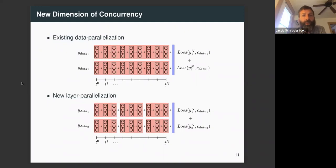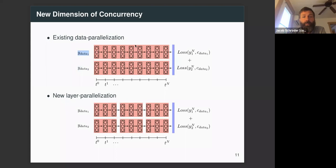If you're familiar with machine learning, you know about data parallelization: for example, take two images and use two GPUs to do forward propagation on each simultaneously, gluing them together with a joint loss computation and then doing backward propagation in parallel. What we've done is add a new dimension of parallelism that splits computation along the layer dimension. There's no reason you couldn't combine layer parallelism with data parallelism.